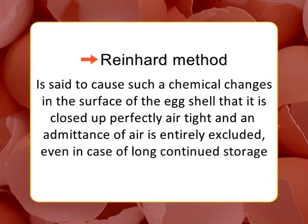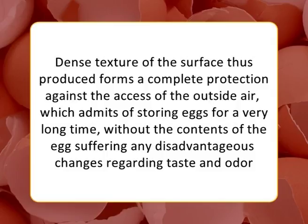Rain-hard method: This method causes a chemical change in the surface of the egg shell that closes it up perfectly airtight, excluding admission of air even during long-continued storage. Eggs are briefly exposed to sulfuric acid, whereby the surface of the egg shell — consisting chiefly of lime carbonate — is transformed into lime sulfate. The dense texture thus produced forms complete protection against outside air, allowing storage for a very long time without disadvantageous changes in taste or odor. The only disadvantage is that sulfuric acid is a dangerous poison that might occasionally penetrate the shell. With this, we conclude today's topic.